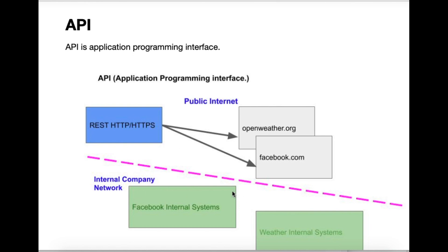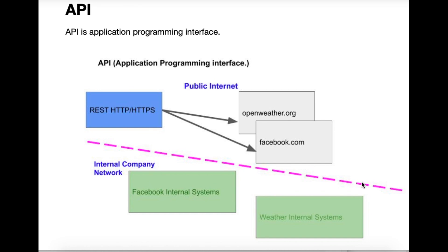Look at these green boxes — these are Facebook's internal systems and the weather organization's internal systems. Those are behind this pink line, which is the firewall — a highly secure internal network you can't connect to. Cross into the pink line and you're out on the public internet. When you type HTTP or HTTPS in a browser, that's called the Hypertext Transport Protocol — it's how a browser opens a web page, and it's also how an API works.